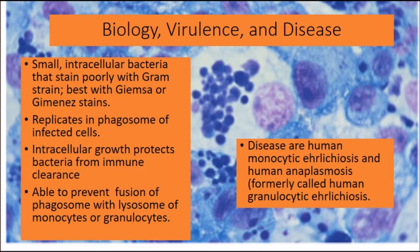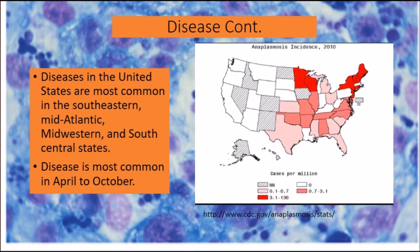The diseases caused include human monocytic ehrlichiosis and human anaplasmosis, formerly called human granulocytic anaplasmosis. In the United States, these diseases are most common in the southeastern, mid-Atlantic, midwestern, and south-central states, and are most prevalent from April to October, when tick activity increases as animals are more active and temperatures are warmer.